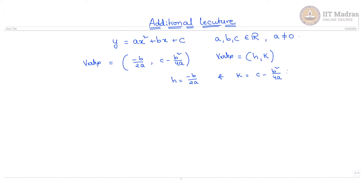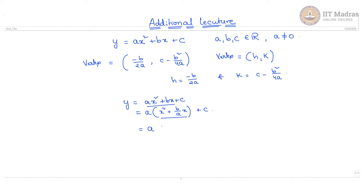We have obtained the required data. Now let us start deriving. We have y is equal to ax squared plus bx plus c. I will take a common from the first two terms and get a times x squared plus b by a times x, plus c. I will also add and subtract b squared by 4a squared to this term, giving a times x squared plus b by a times x plus b squared by 4a squared, and minus b squared by 4a squared plus c.